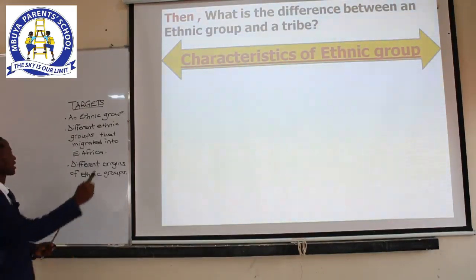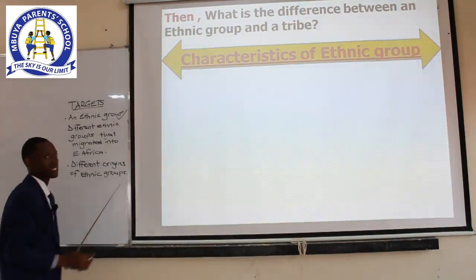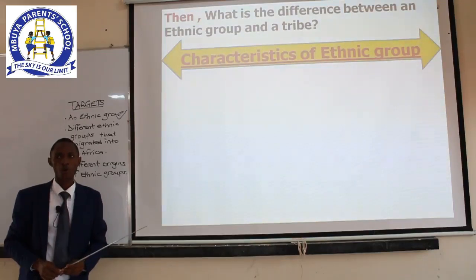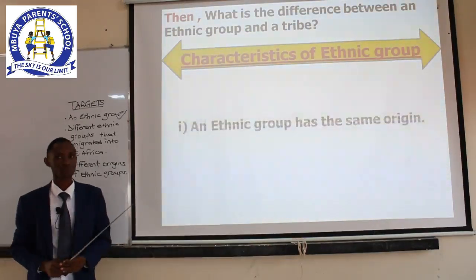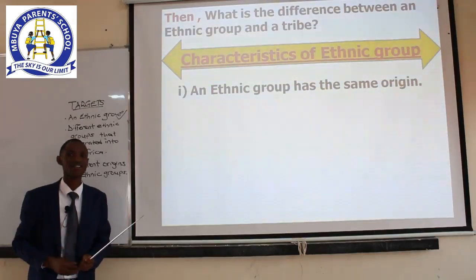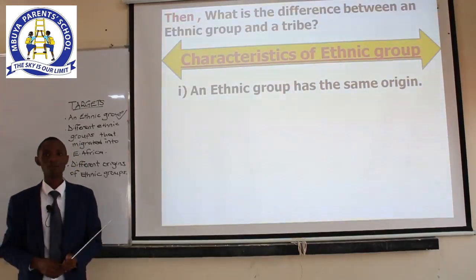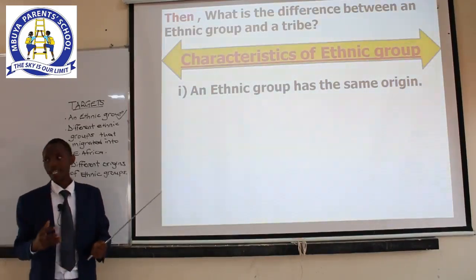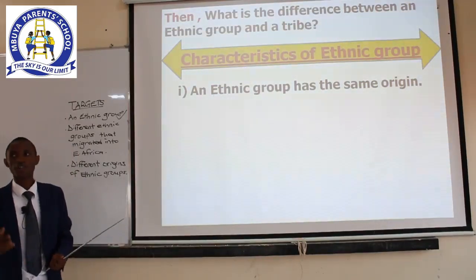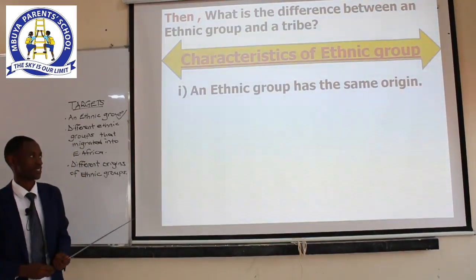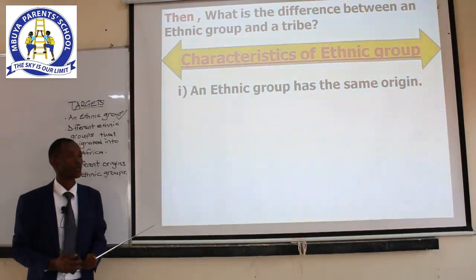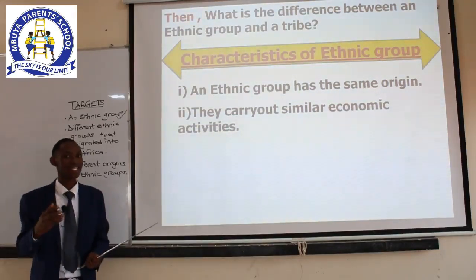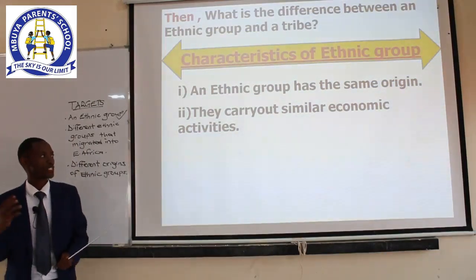Target number one is done — we know what an ethnic group is. We go to the characteristics of an ethnic group. What makes up an ethnic group? One: an ethnic group, as we said in the definition, has the same origin — they migrate from the same point. Two: people of an ethnic group do the same economic activities — you can talk about farming, you can talk about cattle keeping. Under any ethnic group, people carry out similar economic activities.